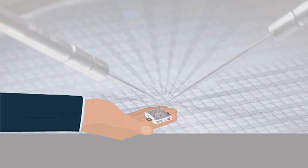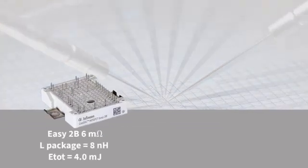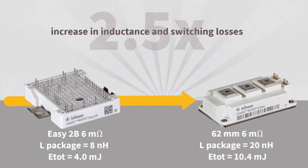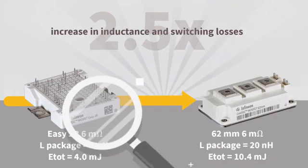With the same 6-milli-ohm internal chipset, a 62-millimeter package has 2.5 times the loop inductance and switching losses compared to an EZ2B package.